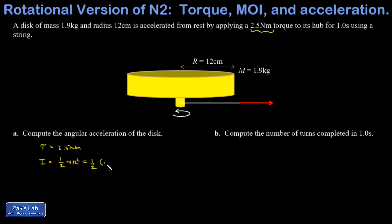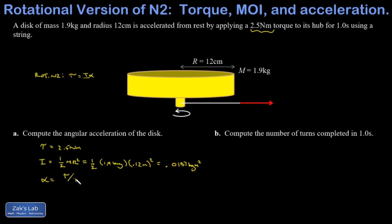For a disk, you look up the formula and get one-half MR squared — that's how hard it is to twist a disk. So I have one-half times the mass, 1.9 kilograms, times R squared, so 0.12 meters squared. That gives a moment of inertia of 0.0137 kilogram meters squared. Now I can get my angular acceleration by rearranging the rotational N2: torque equals I alpha, so alpha equals torque over moment of inertia. That gives me 2.5 Newton meters divided by 0.0137 kilogram meters squared, which comes out to 183 radians per second squared.